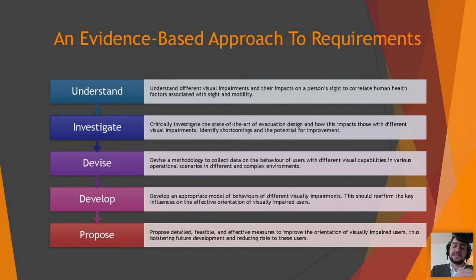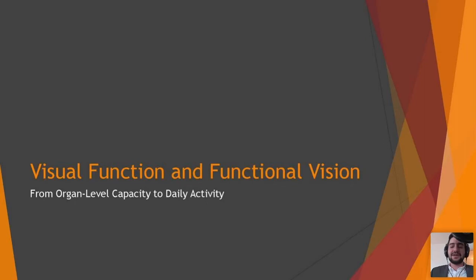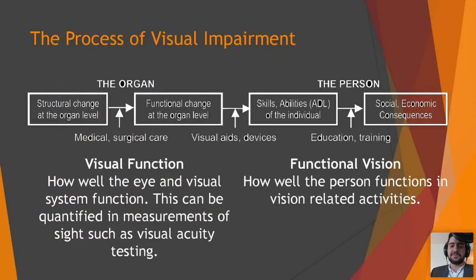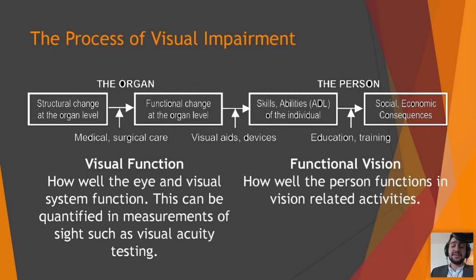Visual function and functional vision — very confusingly named, but they are very different things. At their core, it's about defining observable and measurable parameters. We start with human biology: what the organ can process, from the optic nerve to the retina to the brain — what can the person actually see? This is termed visual function. We can have medical intervention here, but this is not really where navigation comes into play. We then move on to functional vision — what the person does with their vision, what capacity they have to live their daily life. This is really where navigational systems come in.